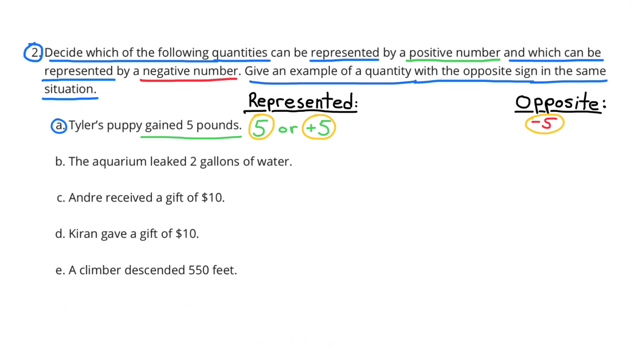A. Tyler's puppy gained 5 pounds. Gaining 5 pounds would be worth positive 5 and the opposite of that would be negative 5.